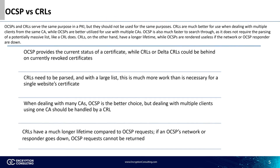Now let's move on to comparing CRLs and OCSPs. OCSPs provide the current status of a certificate, while CRLs or delta CRLs could be behind on currently revoked certificates. OCSPs are always up to date, whereas PKIs using CRLs may have an interval and no delta CRLs, causing a lapse in the certificate revocation status.